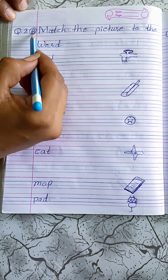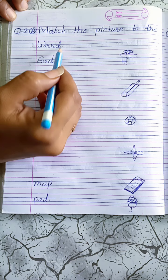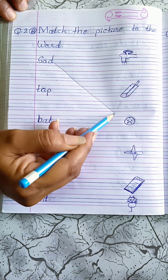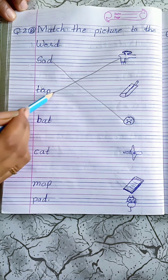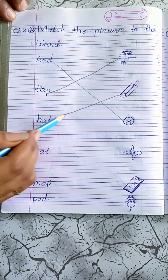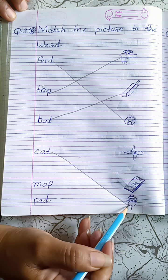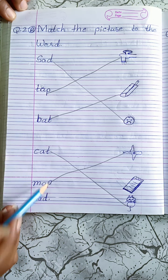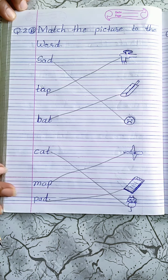Now, take next page. Question 2B: Match the picture to the word. Sad, tap, bat, cat, map, pad. Now, take next page.